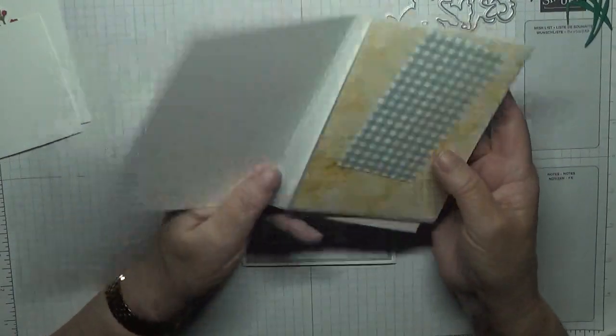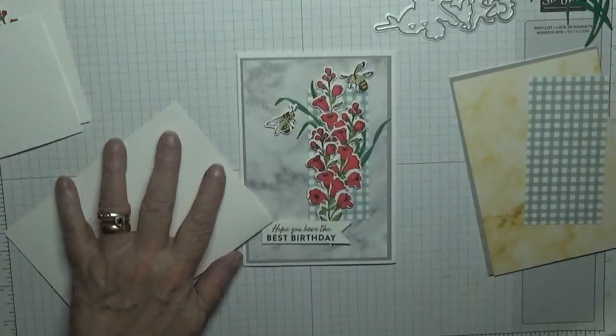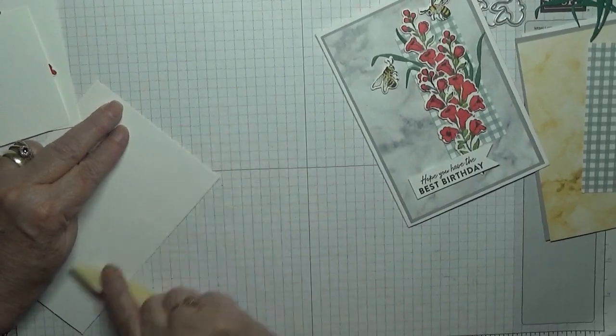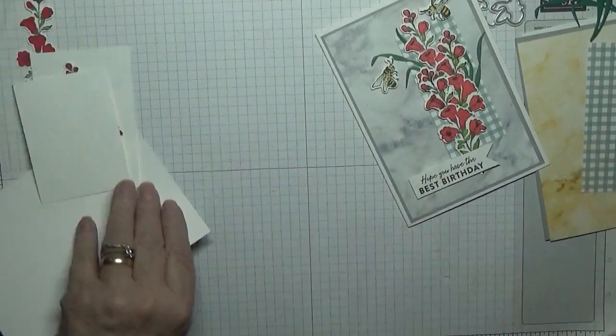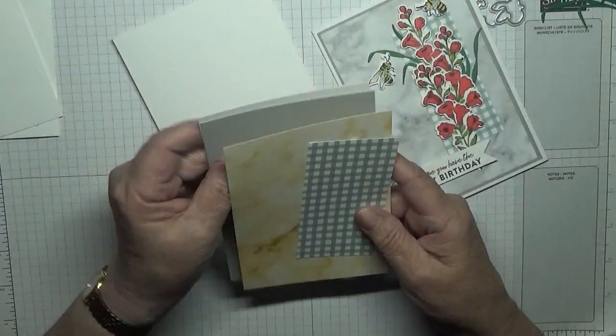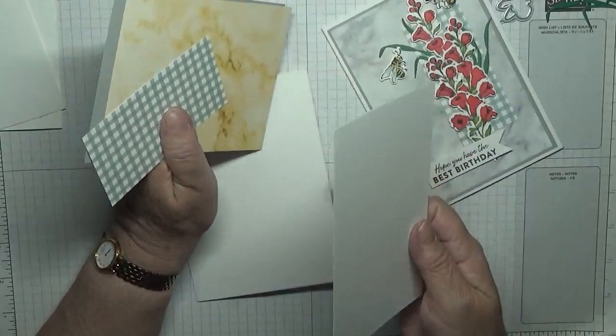Card stock, eight and a quarter by five and seven eighths, scored at four and one eighths, folded in half. I think we'll give it a burnish because I know I've never done it. I have a piece of Whisper White, five and five eighths by three and seven eighths for the inside.